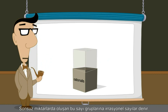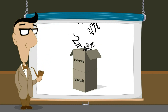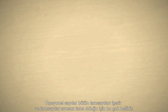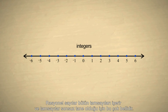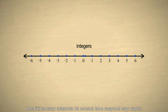These quantities formed an infinitely large group of numbers called the irrational numbers. There are also an infinite number of rational numbers. This is obvious since the rational numbers include all the integers, and there are an infinite number of integers. But there are also an infinite number of rational numbers between any two integers.